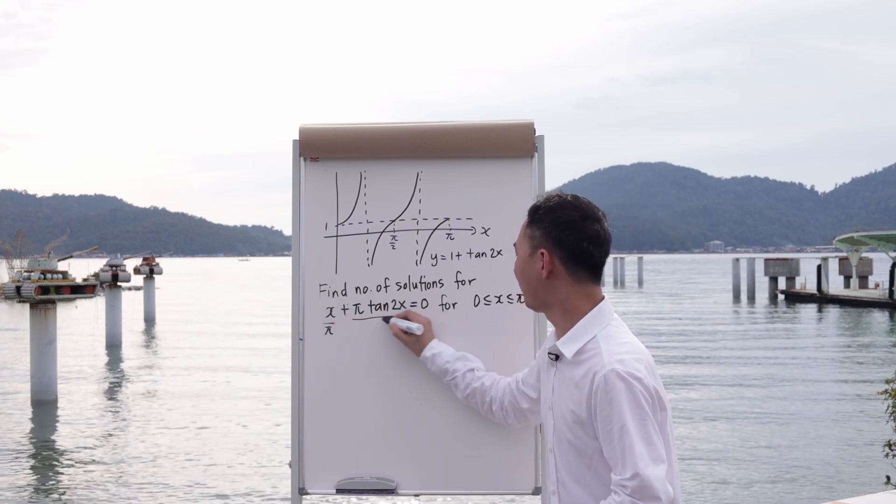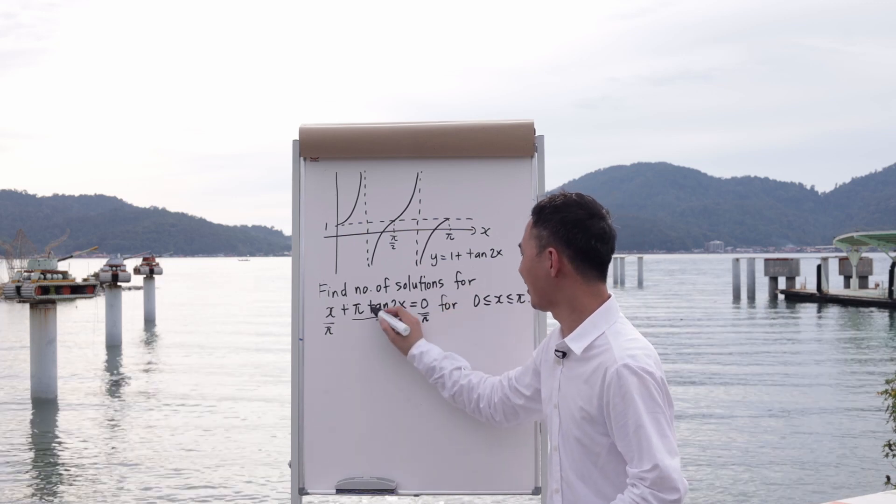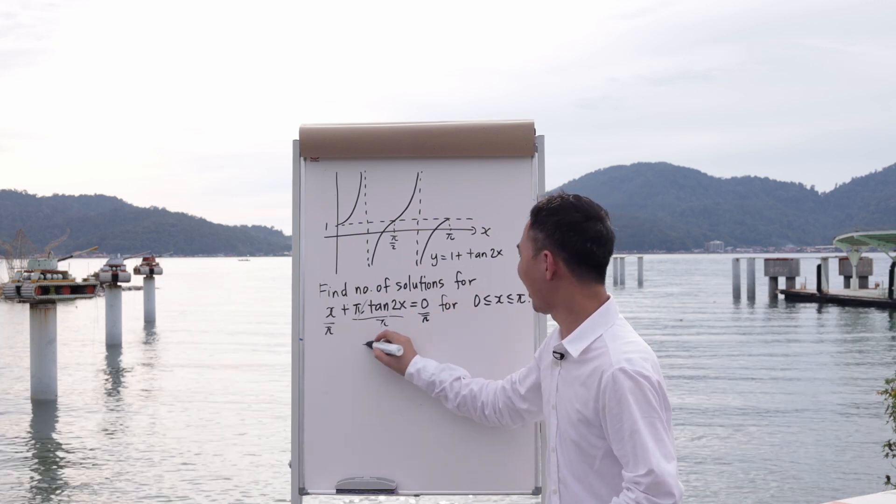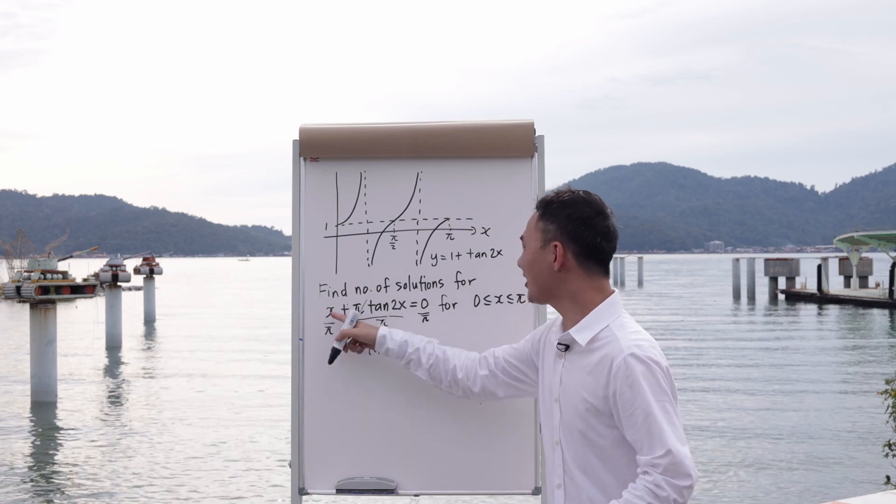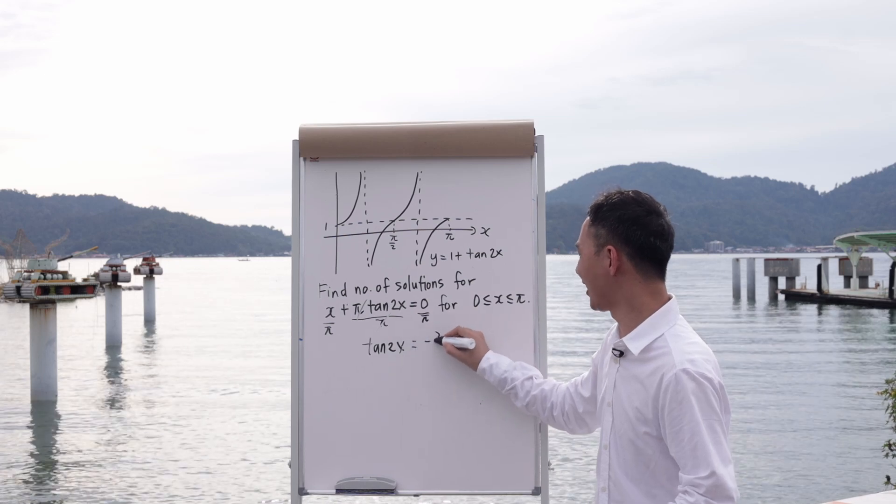I will divide π here, I divided π here, I divided π here. Then I will have cancel it out. So I will have tangent 2x, and then x over π. I will move to the other side, it becomes minus x over π.